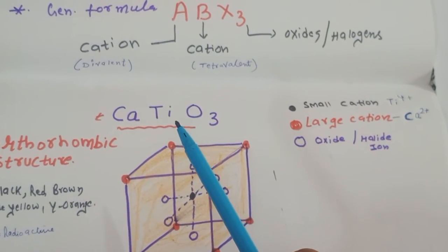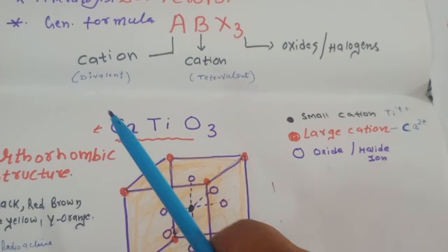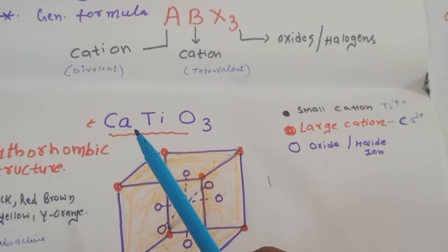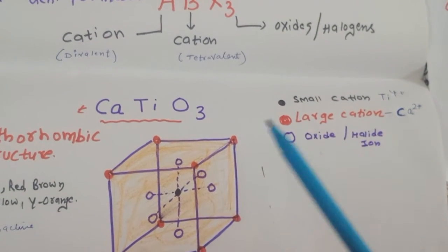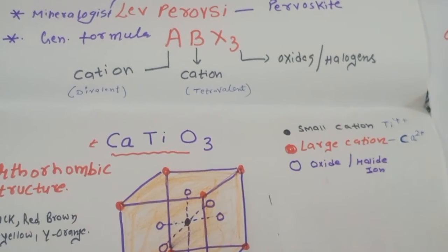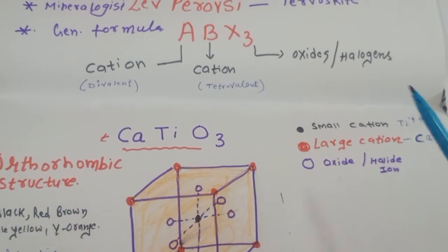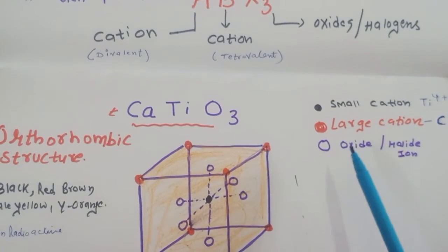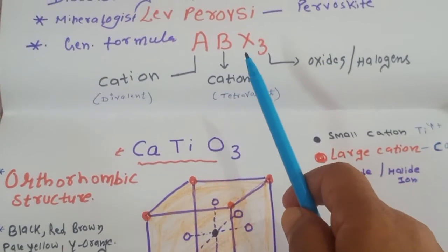But the first cation will be divalent, means the valency of the calcium will be 2+ in this structure, and the valency of our titanium in this structure will be the tetravalent, means it will have the 4+ charge.